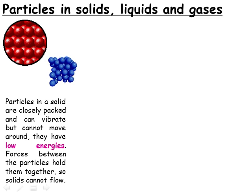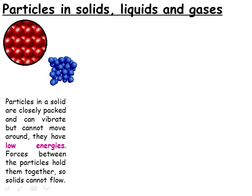If we were able to look at the individual particles in a solid — that is the ions or molecules from which it's made — we would be able to see that they're arranged in regular patterns, and that the particles don't move from place to place, but they do vibrate about their fixed position. This tells us that there must be forces acting between the particles which are strong enough to stop the particles separating from one another. The substance remains solid because the particles do not have enough energy to overcome these forces between them.